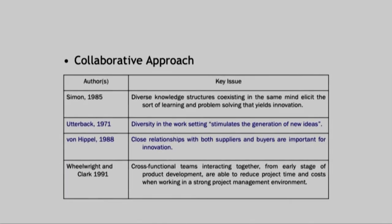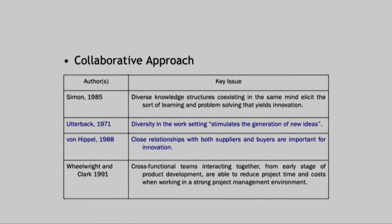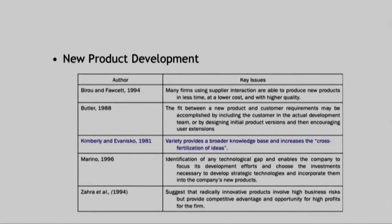Von Hippel (1988) wrote that close relationships with both suppliers and buyers are important for innovation — you cannot succeed in innovation without collaboration. Innovation is there only if it is implemented; it is not just creating something new. Like the iPad — it is an innovation because people are demanding the product. Cross-functional teams interacting together from early stages of product development can reduce project time and cost in a strong project management environment.